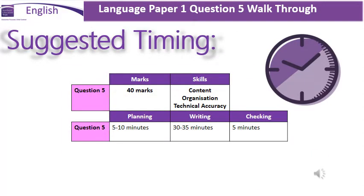This question is worth a mammoth 40 marks, meaning that it is 25% of your overall GCSE. This question tests three different skills: the content of your writing — the ideas, vocabulary and use of language; how your writing is organised and structured, making sure you've got a clear beginning, shift and end with clear linked paragraphs; and also your technical accuracy, which includes your SPaG, your sentence structures and your vocabulary.